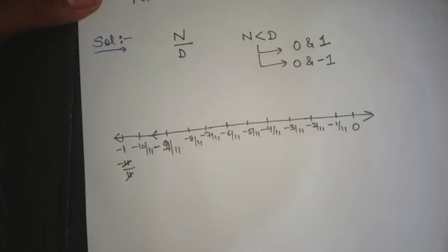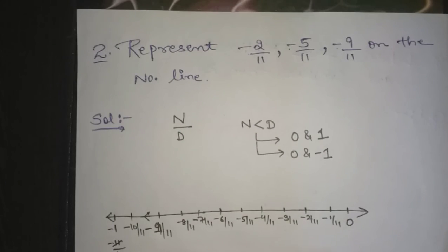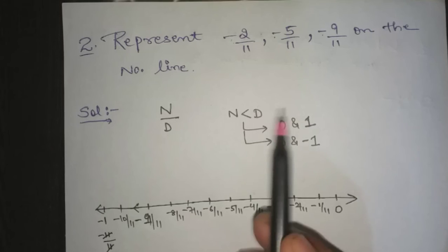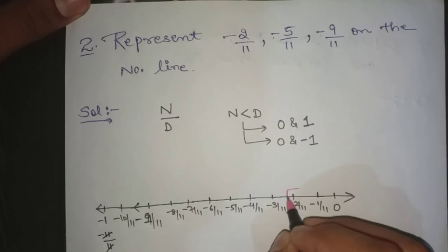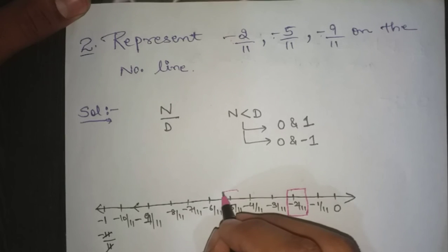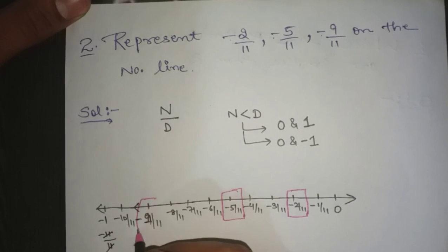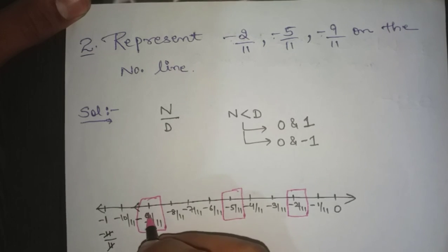Now let's see what numbers we have. The first number is minus 2 by 11, the second is minus 5 by 11, and the third is minus 9 by 11. So this is your answer.